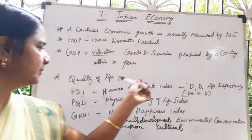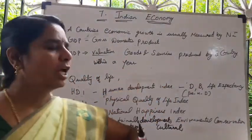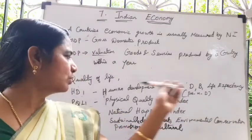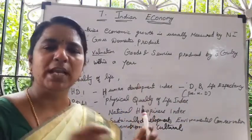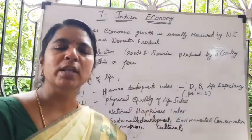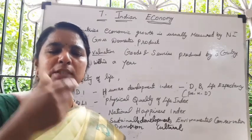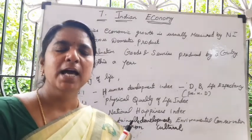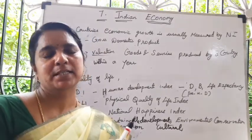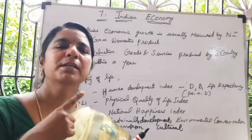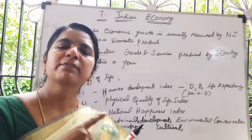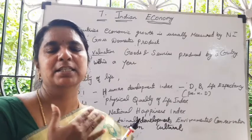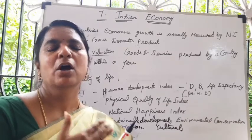HDI — Human Development Index — and PQLI — Physical Quality of Life Index — are also important indicators. Both include birth rate, death rate, and life expectancy of people, as well as whether people are living happily and healthily and whether medical facilities are available in the country.